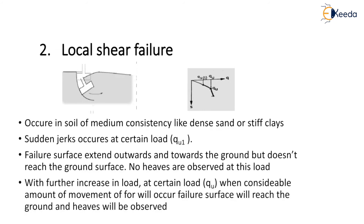With further increase in load, at a certain load QU, when a considerable amount of movement occurs, the failure surface will reach the ground and heaves will be obtained. So in local shear failure, the movement of the soil will be outward and towards the surface, but it won't reach the surface at initial failure. For the soil to reach the surface and heaves to be formed, a considerable amount of settlement is required.